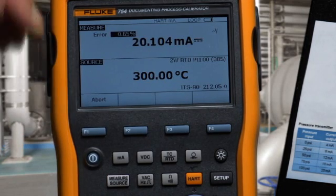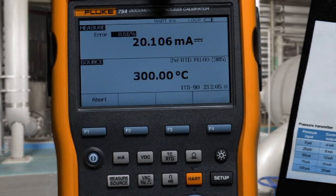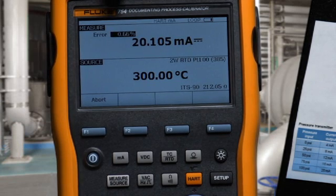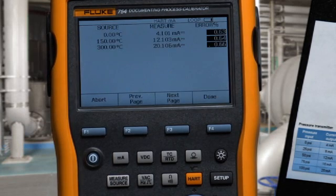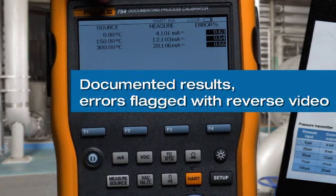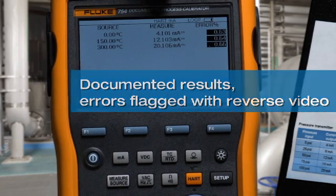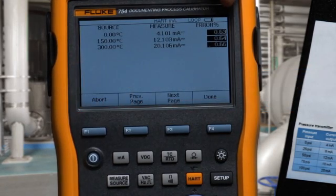Next, the full scale value is applied, milliamps are measured, and the error percent of span is calculated. When the test is complete, the applied temperature, milliamp value, and error percent of span is recorded.